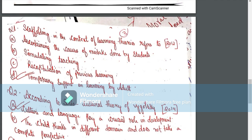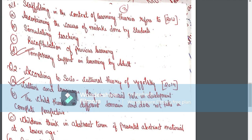Scaffolding in the context of learning theory refers to highly supported learning. This includes ascertaining and correcting mistakes done by the student, stimulating teaching, and recapitulation of previous learning. It is temporary support in learning provided by an adult.